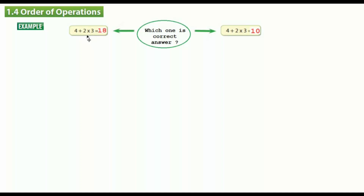Two same questions: four plus two times three. Which one is the correct answer — 18 or 10? If we start with addition first: four plus two equals six, and six times three equals 18.